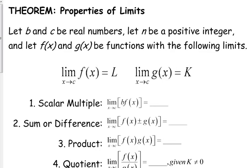Now, here's the new stuff. Same setup. B and C are real numbers. They are constants. N is still a positive integer. We've got two functions, F of X and G of X. We don't know what those functions are, but we are told that as we're approaching C, for F of X, the limit is going to be some other number L, and for G of X, it's going to be some other number K. That's the only thing that we know about these two functions are those two specific limits.